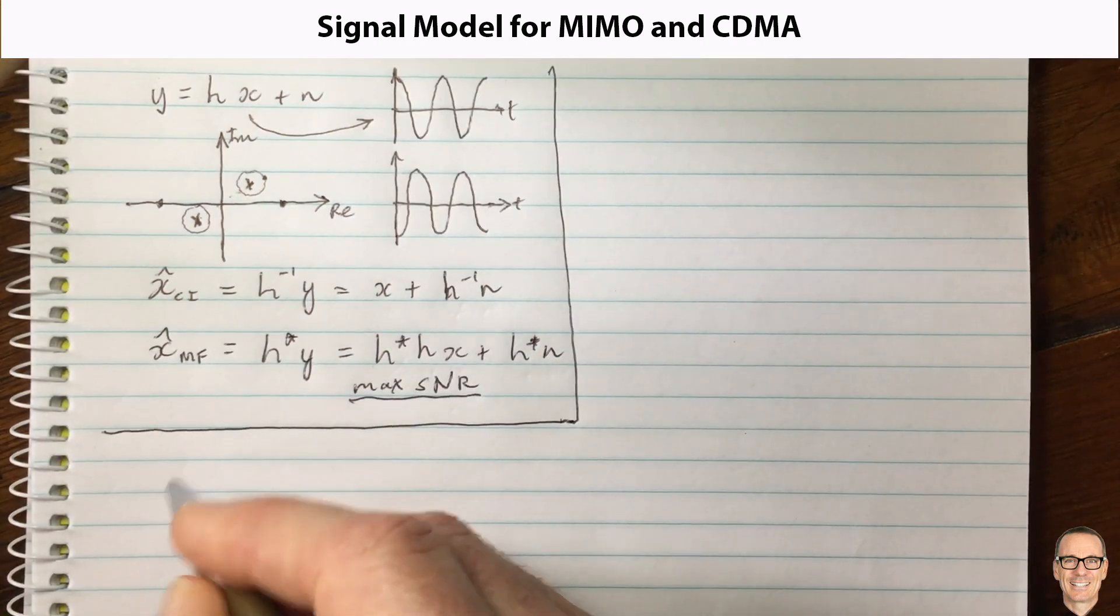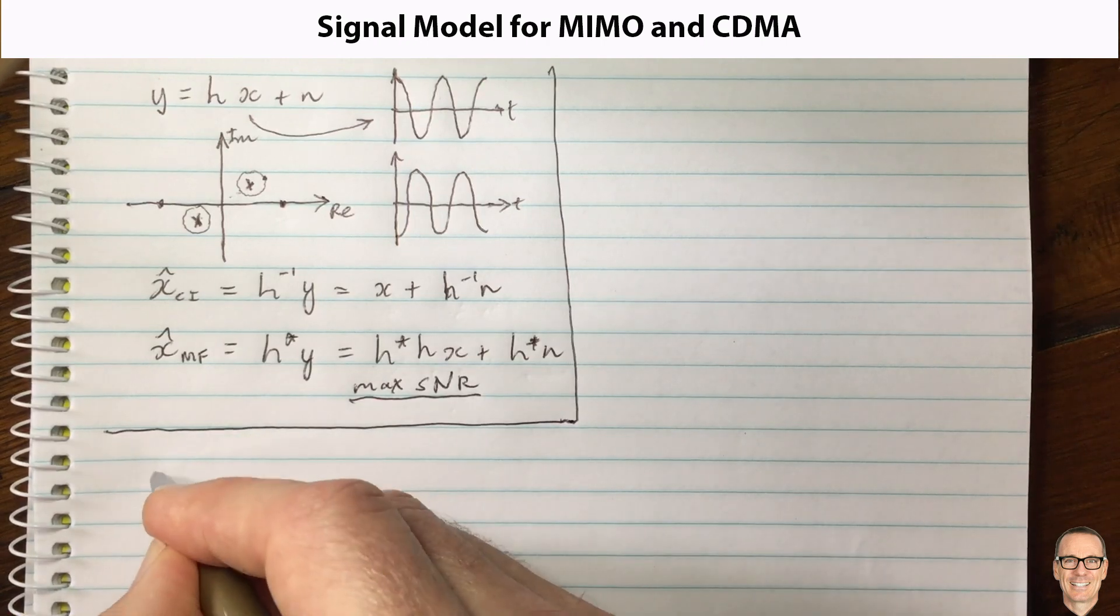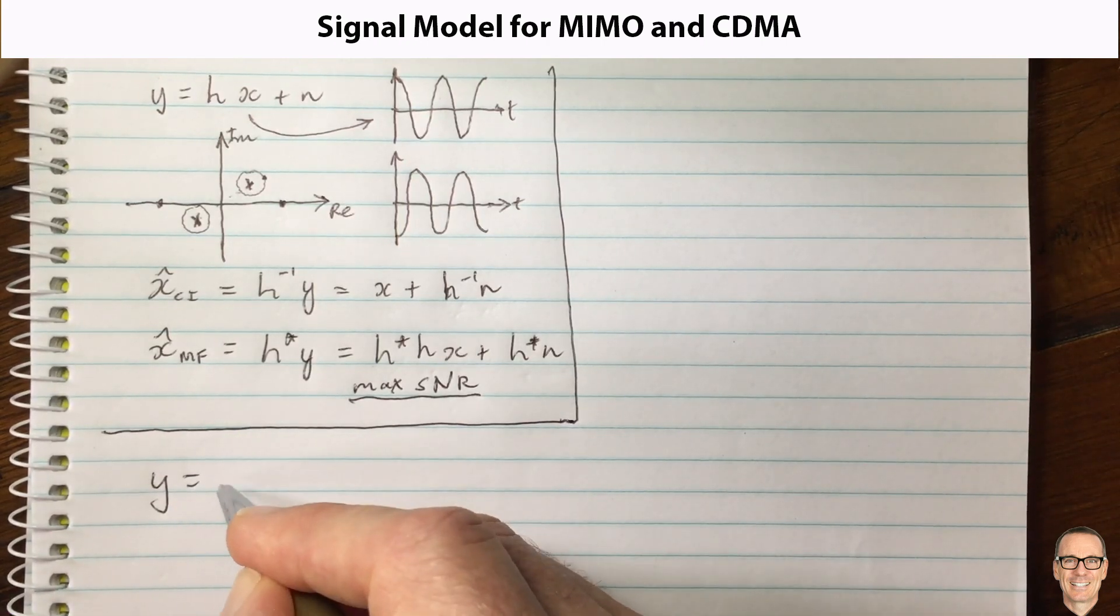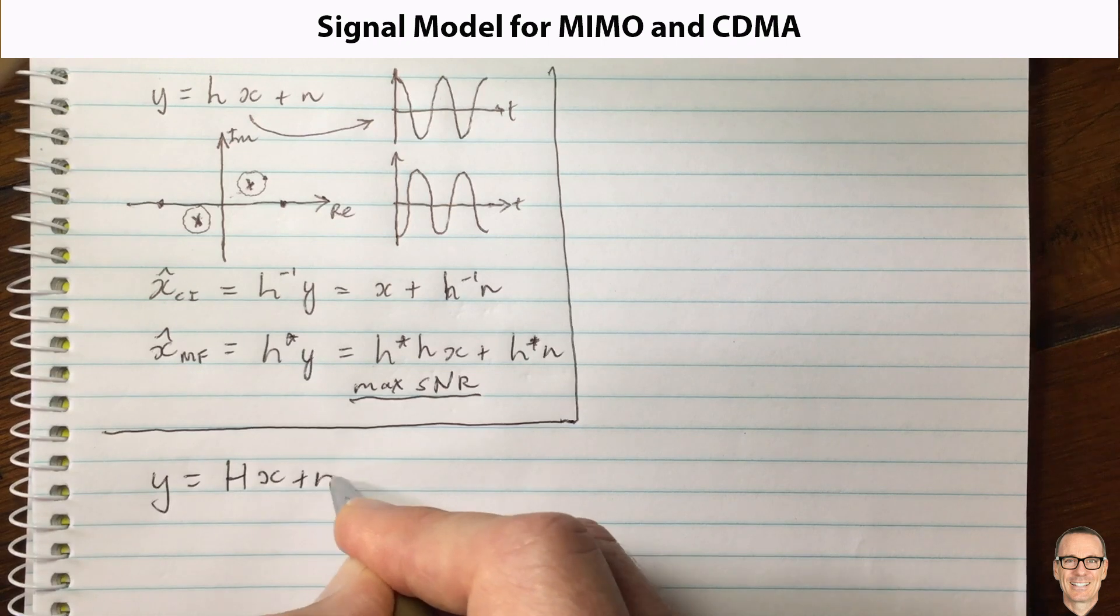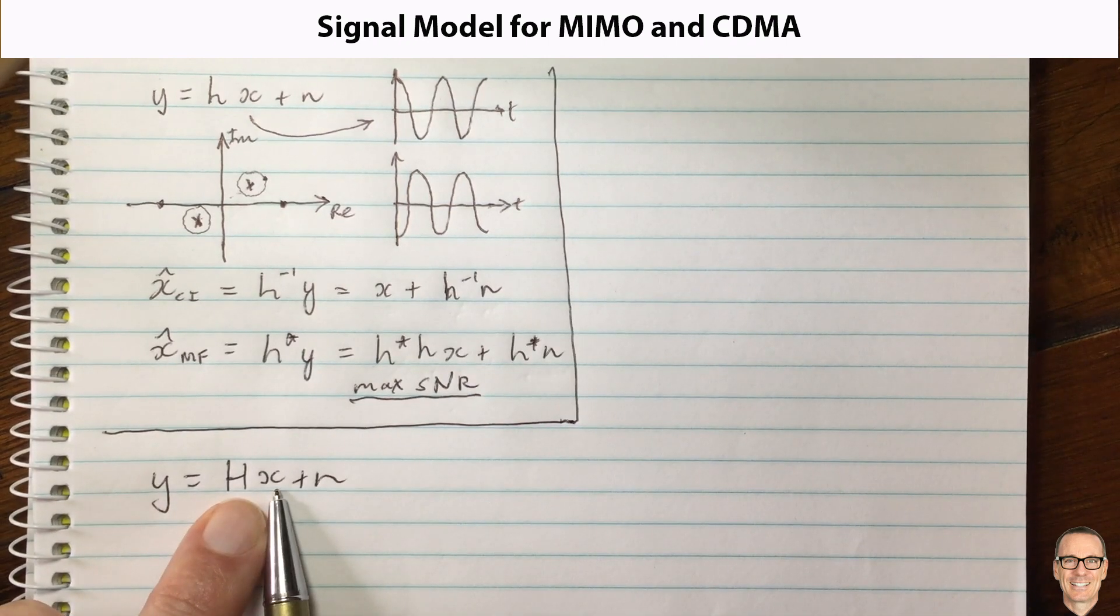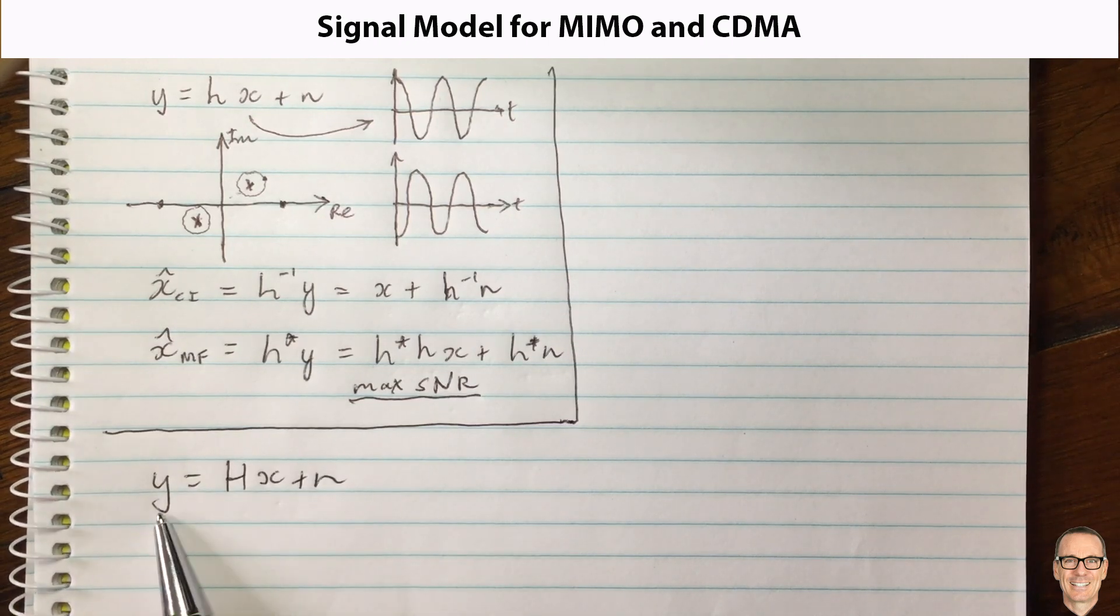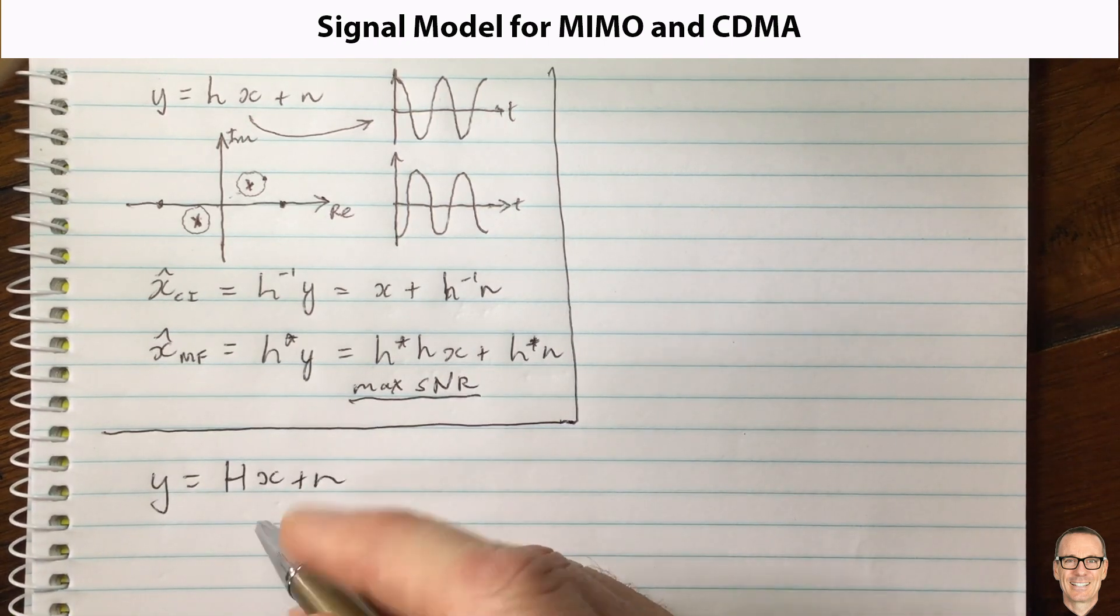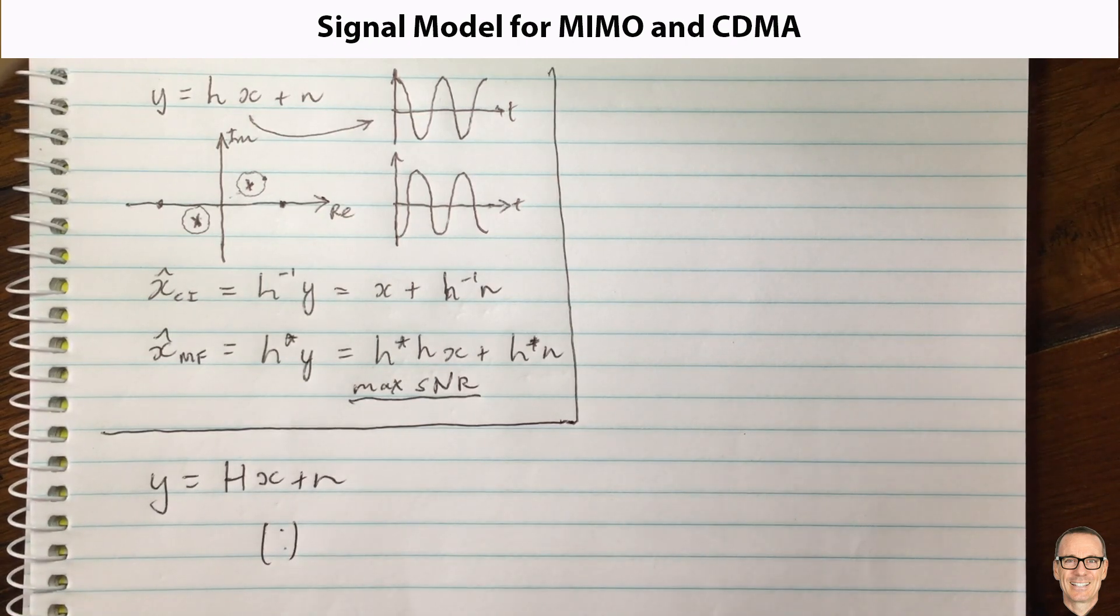Everything now is going to be a vector. So y equals H, or a matrix y equals Hx plus n. So in this equation here we've got x is now a vector, H is a matrix, y is a vector. I'm just going to underneath it draw an example of dots just to indicate this.